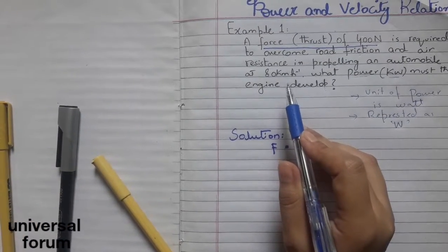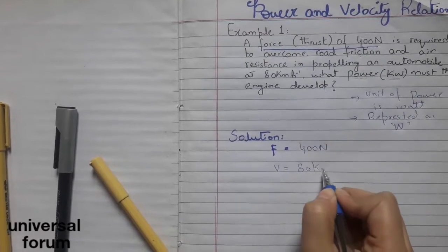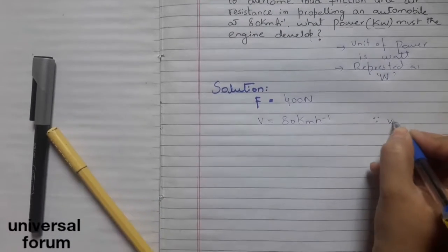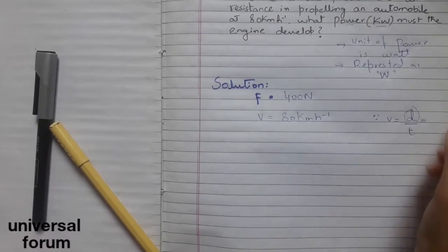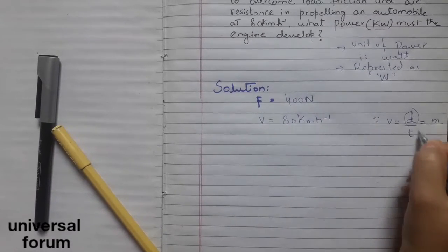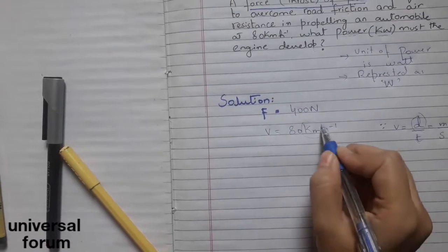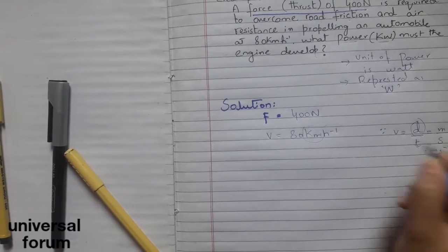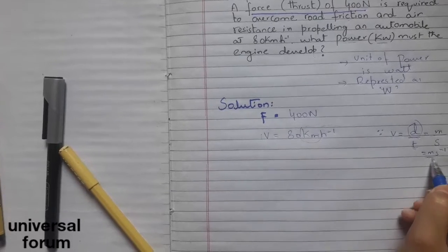V equals 80 kilometers per hour. As we know that velocity equals distance over time. The unit of velocity is meter per second, so now I'm going to convert the velocity into meters per second.